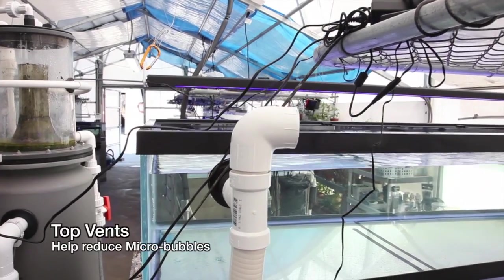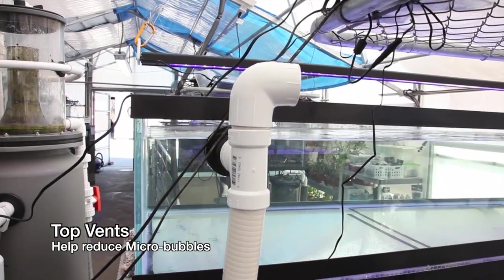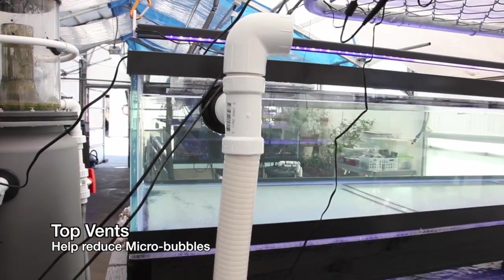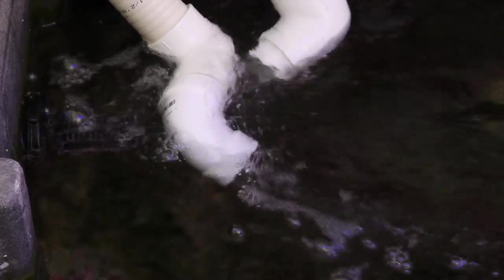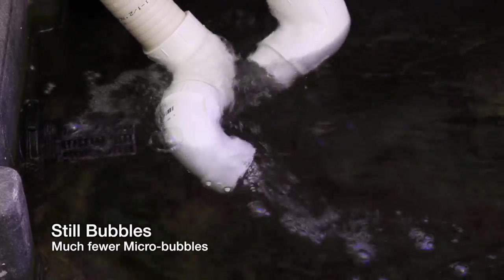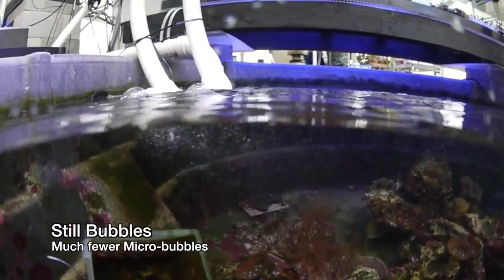One of the best things to do is provide a top vent for the air to escape so that not all the air is forced down into the tank or sump below. Although there is quite a lot of air making it into the tub still, the amount of smaller bubbles is minimized.